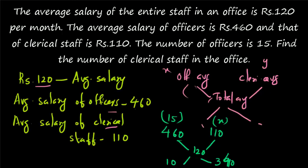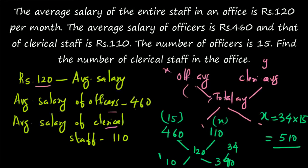The difference between 460 and 120 is 340. So the ratio is 1 to 34. The number of clerical staff x is equal to 34 into 15, since 15 is the number of officers. So the number of clerical staff is equal to 34 into 15, which is equal to 510.